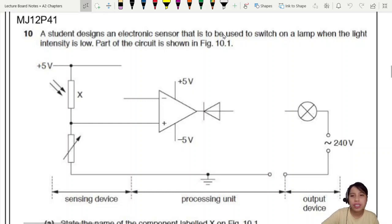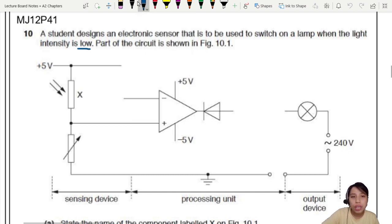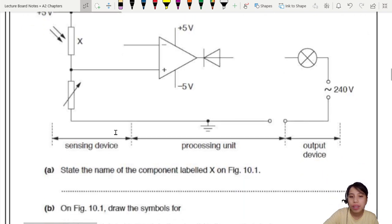MJ12P41Q10. A student designs an electronic sensor to be used to switch on a lamp when the light intensity is low. So when it's low, you want to turn on the lamp. Part of the circuit is already shown. Okay, looks pretty cool. I mean, standard circuit.